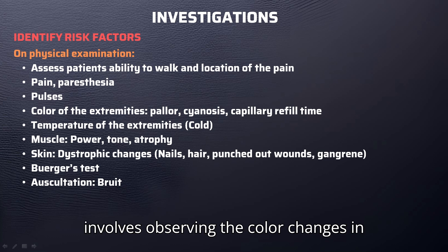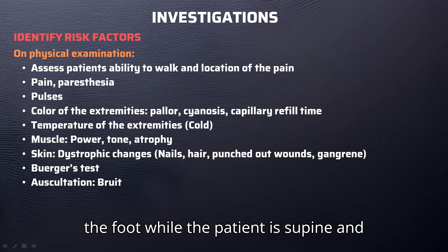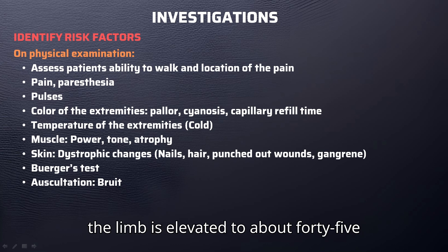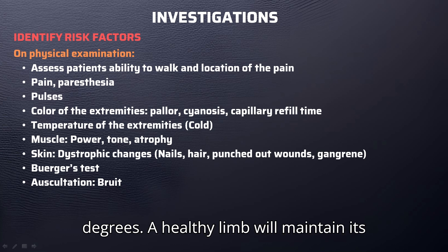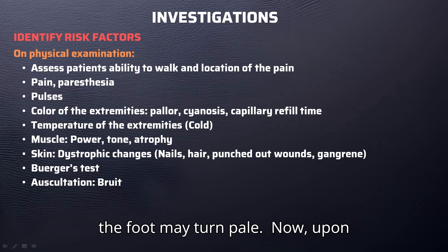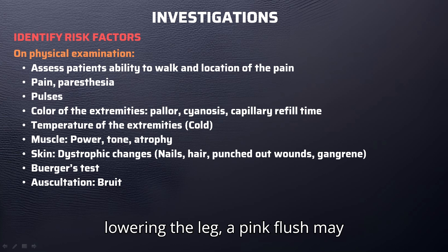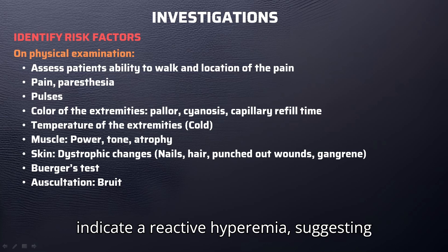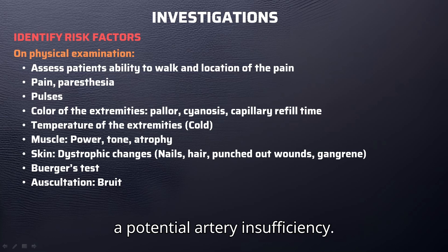Buerger's test involves observing color changes in the foot while the patient is supine and the limb is elevated to about 45 degrees. A healthy limb will maintain its color, while in compromised circulation the foot may turn pale. Upon lowering the leg, a pink flush may indicate reactive hyperemia, suggesting potential arterial insufficiency.